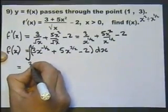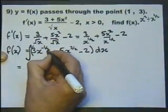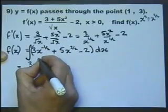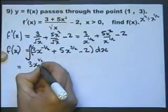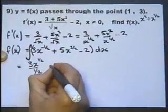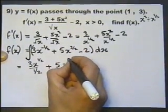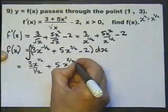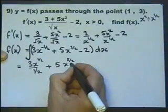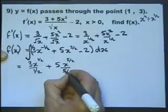When we integrate, we raise this power by 1. And if you raise minus half by 1, you'll get plus half. And divide by that new power. If you raise that by 1 power, it'll go up to being 5 over 2. Raising that by 1 whole power. And divide by that new power.